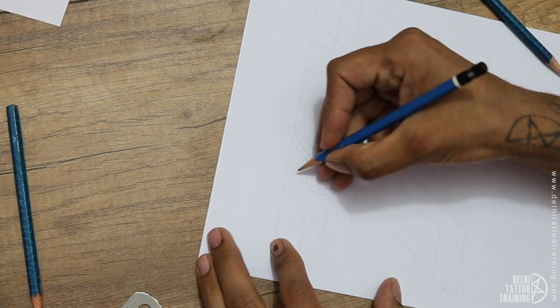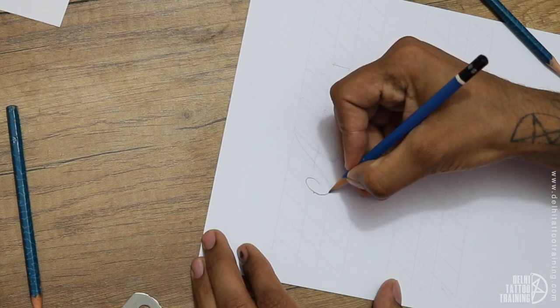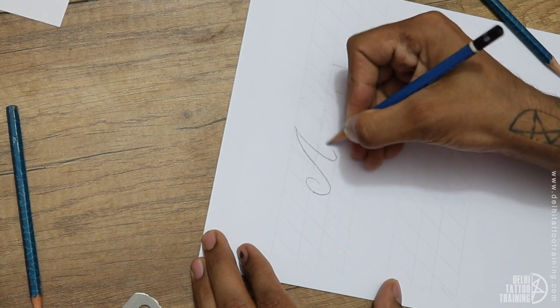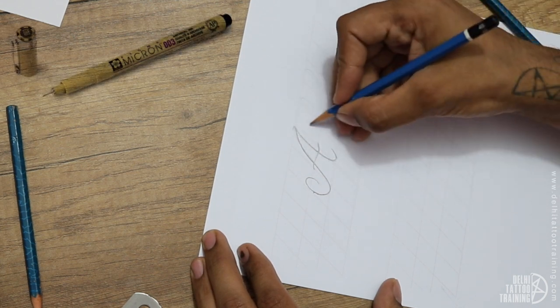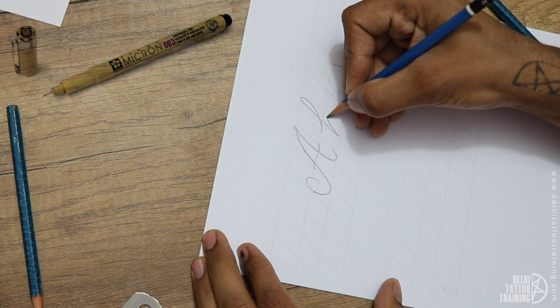Then I come back with a 4B pencil to do a semi-finished kind of look. Again, this is not the final product. The final product will always be with a micron pen. A micron pen is a fiber tip pen that will give me a finished look.